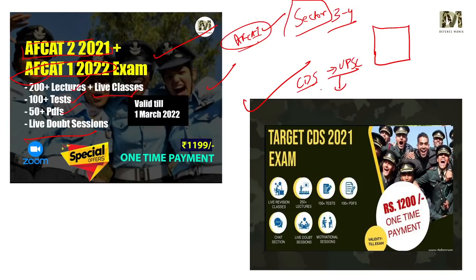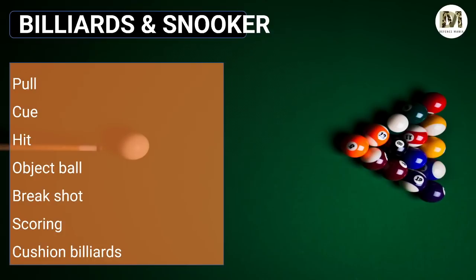Next game is Billiards and Snooker. Important terms: Pull, Cue, Hit, Object Ball, Break Shot, Scoring, and Cushion Billiards.